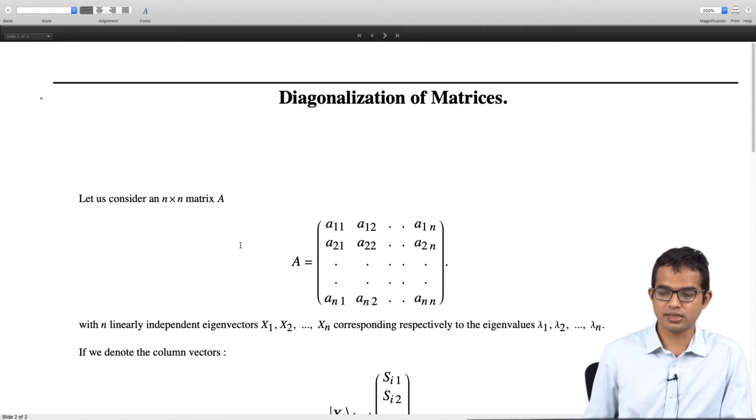But for the purpose of this lecture, let us look at matrices which have n eigenvalues lambda 1 all the way up to lambda n. Some of these could be repeated. There is no problem with that. But the key requirement is that all these n eigenvectors are linearly independent.